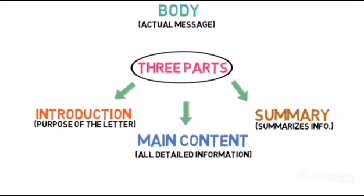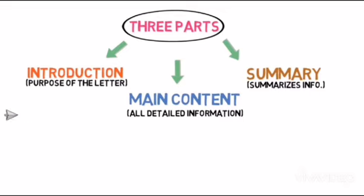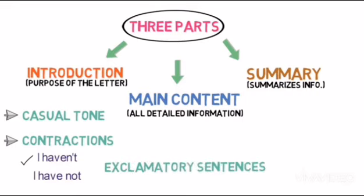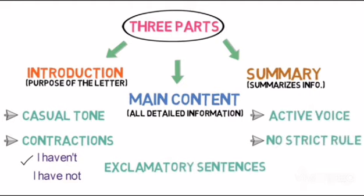In informal letters, there are certain points you need to remember. Point 1: you should use a casual tone while writing the letter. Point 2: you can use contractions, like 'I haven't' instead of 'I have not'. Third: you can use exclamatory sentences. Fourth: you should write in an active voice. Fifth, and most important: there is no strict rule to divide your body into 3 paragraphs. Please keep these points in mind when writing the letter.